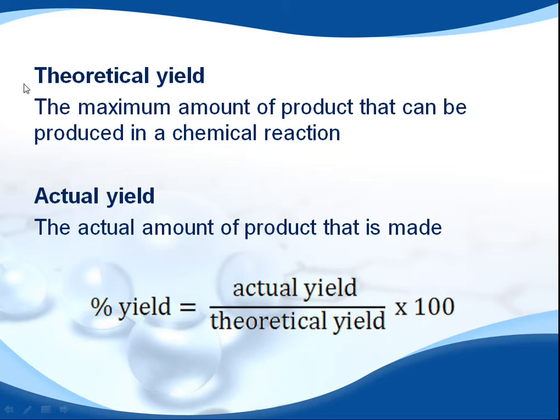Let's start with theoretical yield. It's the maximum amount of product that can be produced in a chemical reaction. The actual yield is the actual amount of product that is made. And percentage yield is the actual yield divided by the theoretical yield times 100.